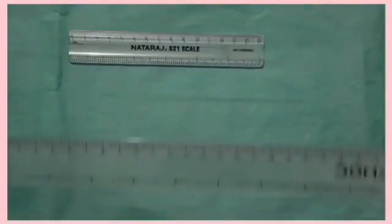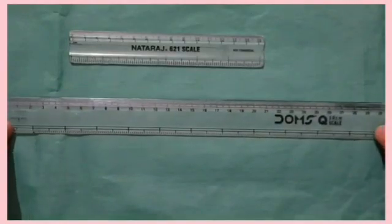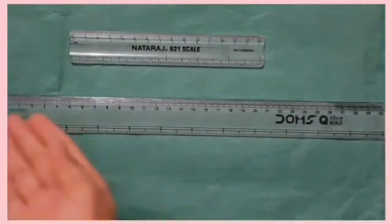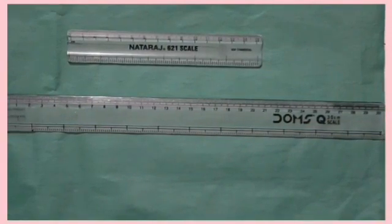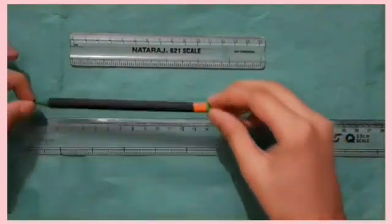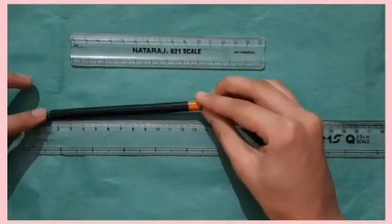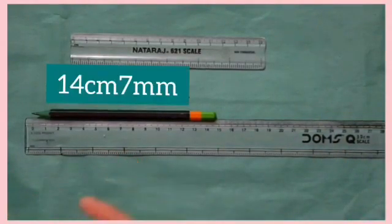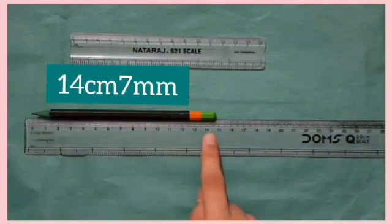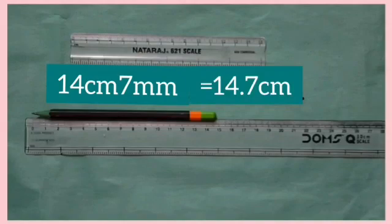Now see, I have another scale which has 30 big marks on it. This scale is also used to measure length in centimeters. Now, let us find out the length of this pencil. We will find out the length of this pencil starting from mark 0. The length of the pencil is 14 centimeters 7 millimeters, which is written as 14.7 in centimeters.